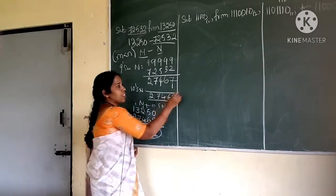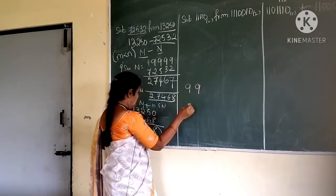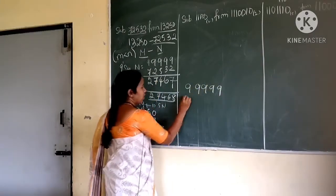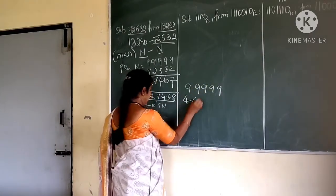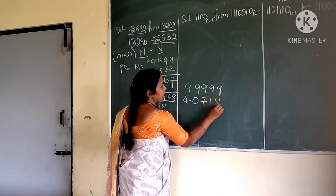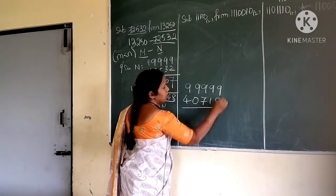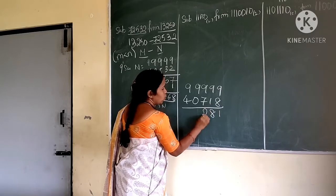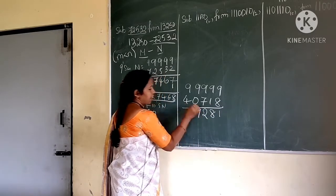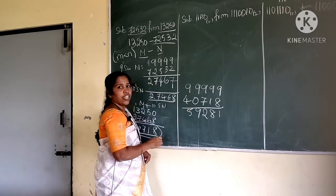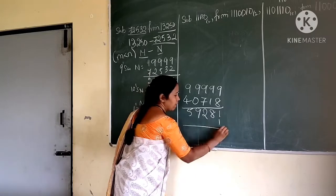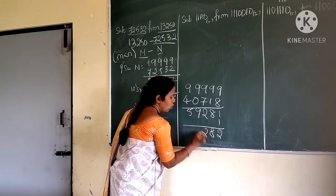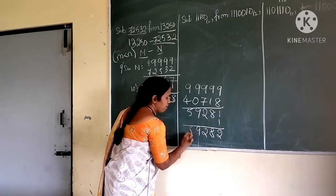So r's complement — first I should find out the 9's complement. 9's complement of the result (40718): 5, 9, 4, 0, 7, 1, 8 — so again it gives 5, 9, 2, 8, 1. Then adding 1, the 10's complement is 5, 9, 2, 8, 2.